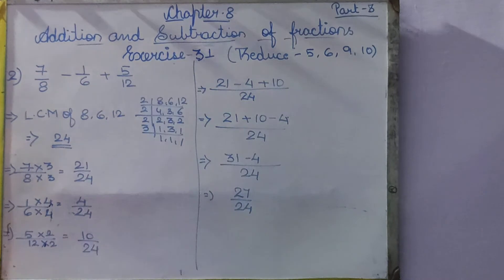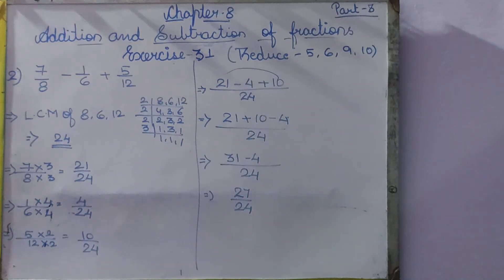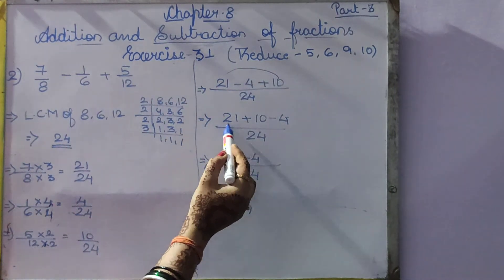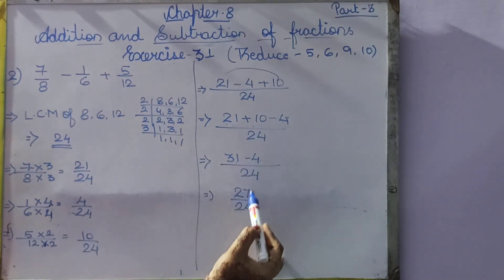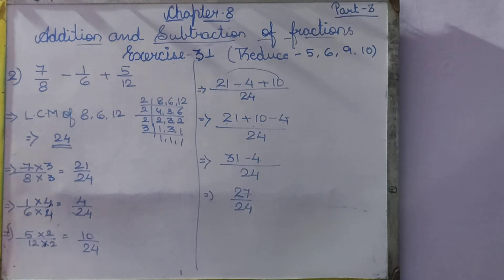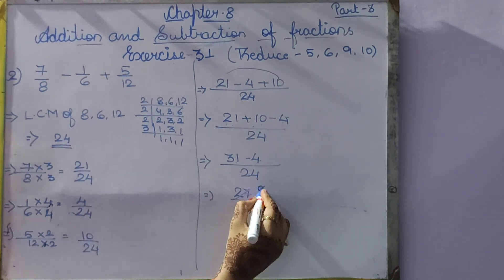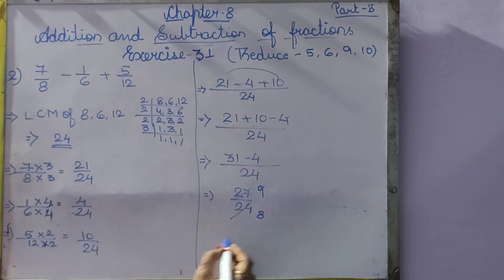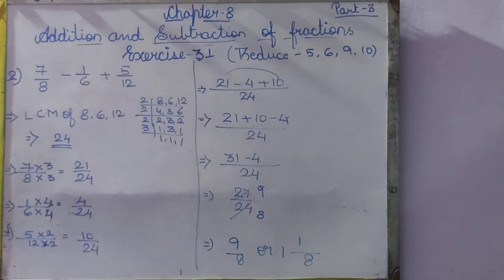Now 21 minus 4 plus 10. We take out all the plus-sign numbers first: 21 plus 10 minus 4. 21 plus 10 is 31, and 31 minus 4 is equal to 27 by 24. See, these two numbers come in the table of 3, so we divide: 3 9's are 27 and 3 8's are 24. So 9 by 8, or you can write it as 1 and 1 by 8 — that is your answer.